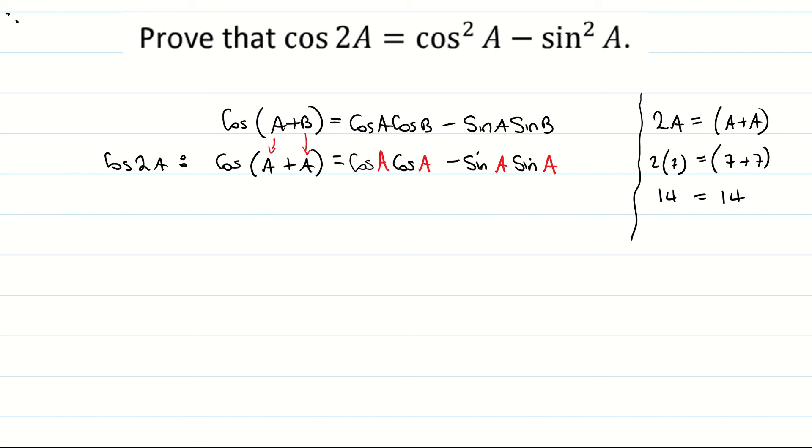And now I'm going to evaluate them. So I have cos a plus a equals cos a times cos a, which is squaring it so that becomes cos a all to be squared. And sin a multiplied by sin a becomes sin a all to be squared.